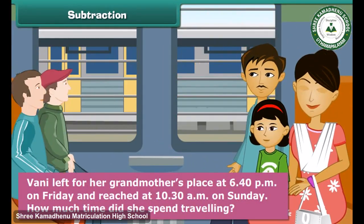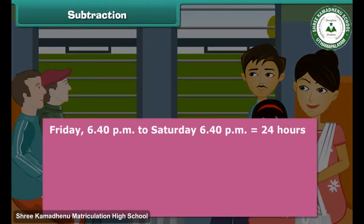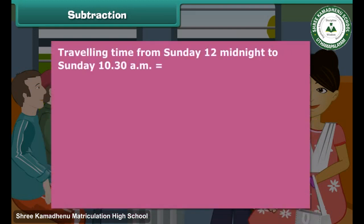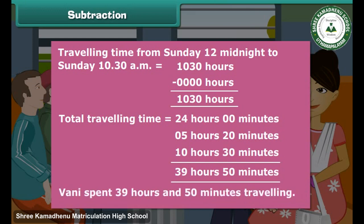Vani left for her grandmother's place at 6:40 p.m. on Friday and reached at 10:30 a.m. on Sunday. How much time did she spend travelling? Friday 6:40 p.m. to Saturday 6:40 p.m. equals 24 hours. Travelling time from Saturday 6:40 p.m. to Saturday 12 midnight equals 2400 minus 1840 hours, which is 5 hours and 20 minutes. Travelling time from Sunday 12 midnight to Sunday 10:30 a.m. is 10 hours and 30 minutes. Total travelling time equals 39 hours and 50 minutes. Therefore, Vani spent 39 hours and 50 minutes travelling.